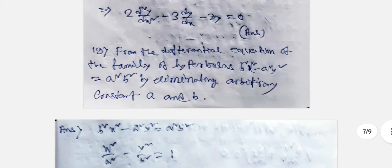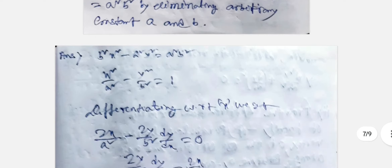Next question: Form the differential equation of the family of hyperbolas b²x² - a²y² = a²b² by eliminating arbitrary constants A and B. Dividing by a²b²: x²/a² - y²/b² = 1. Differentiating with respect to x: 2x/a² - (2y/b²)·dy/dx = 0, so (y/b²)·dy/dx = x/a², giving y/x·dy/dx = b²/a². Differentiating again: (1/x)·[x·d²y/dx² + (dy/dx)·x·(dy/dx) - y]/x² = 0, yielding xy·d²y/dx² + x(dy/dx)² - y·dy/dx = 0.